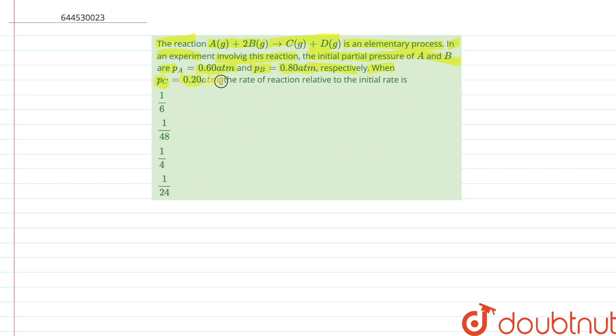0.2 atmosphere, the rate of reaction relative to the initial rate is. Since it's an elementary reaction, the rate of this reaction can be written as k into the partial pressure of A into the partial pressure of B square.